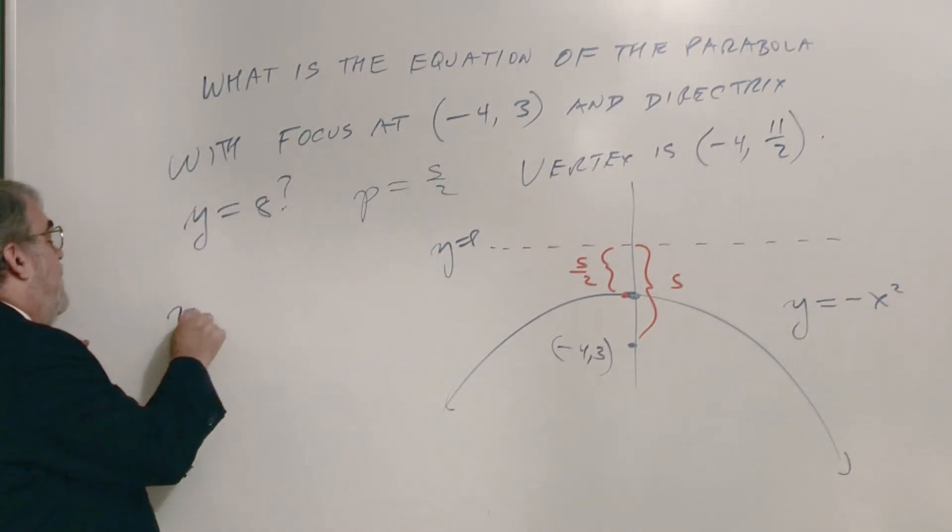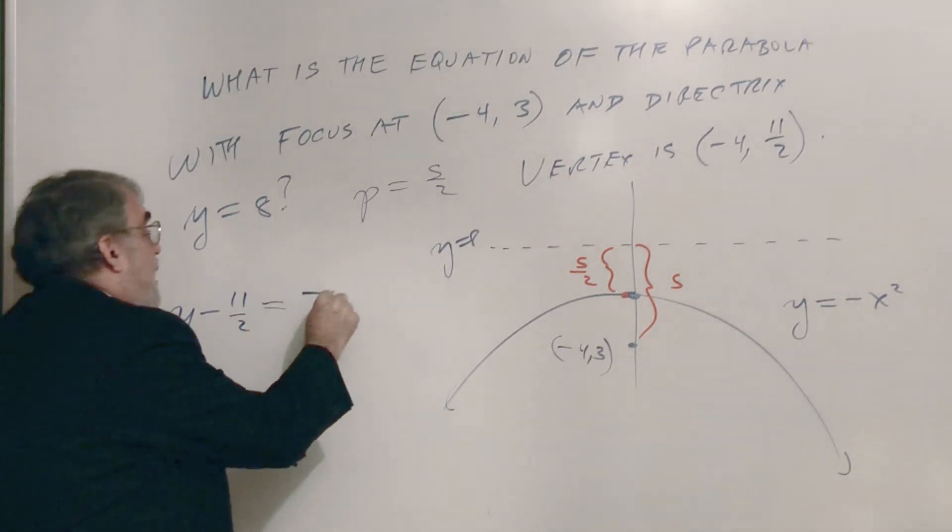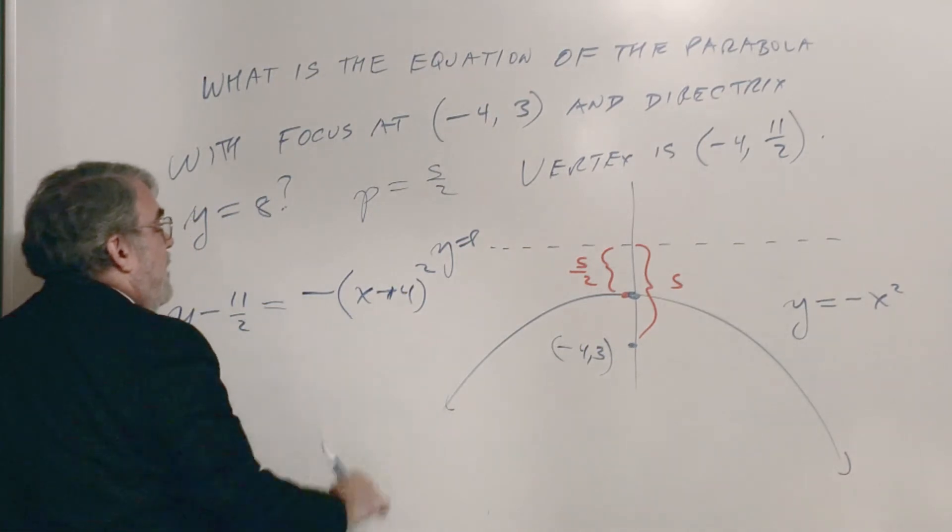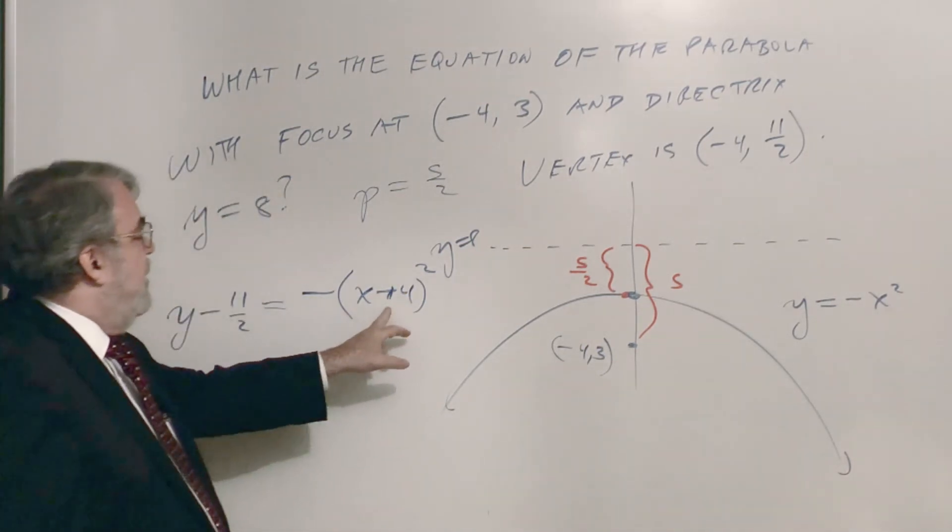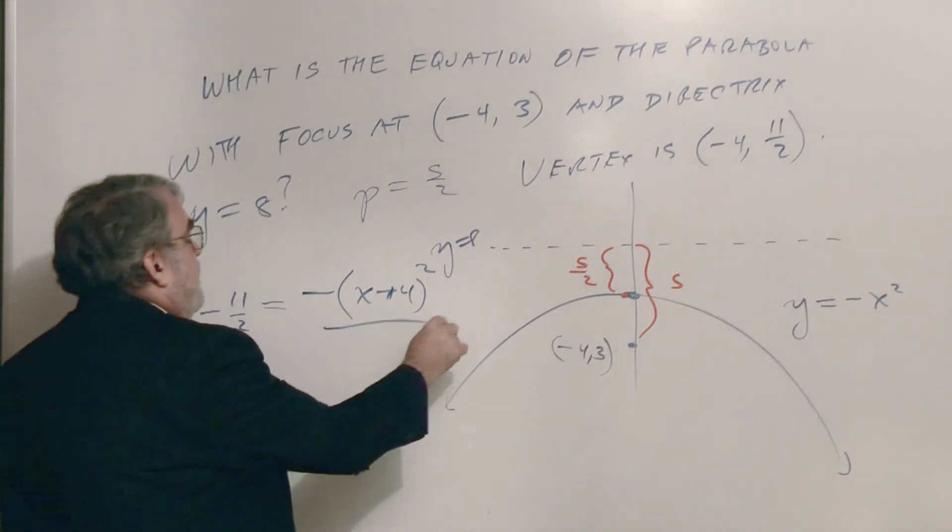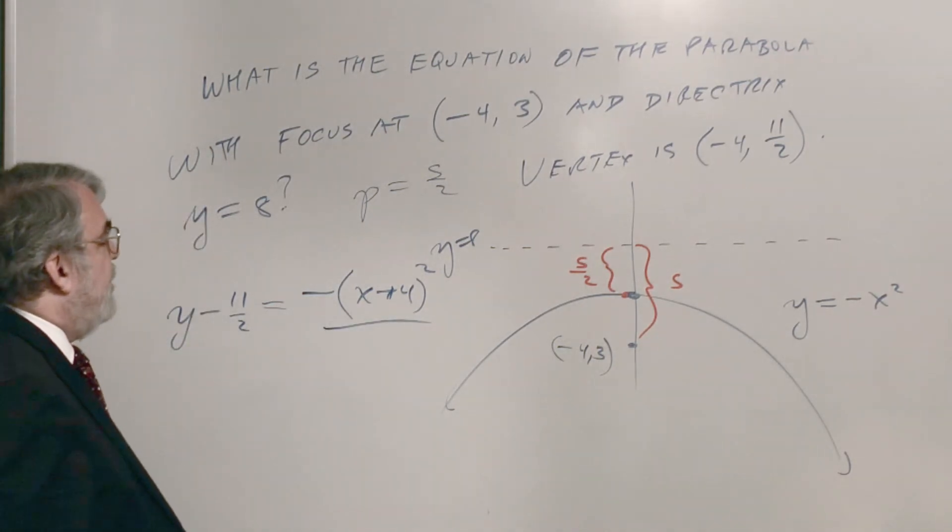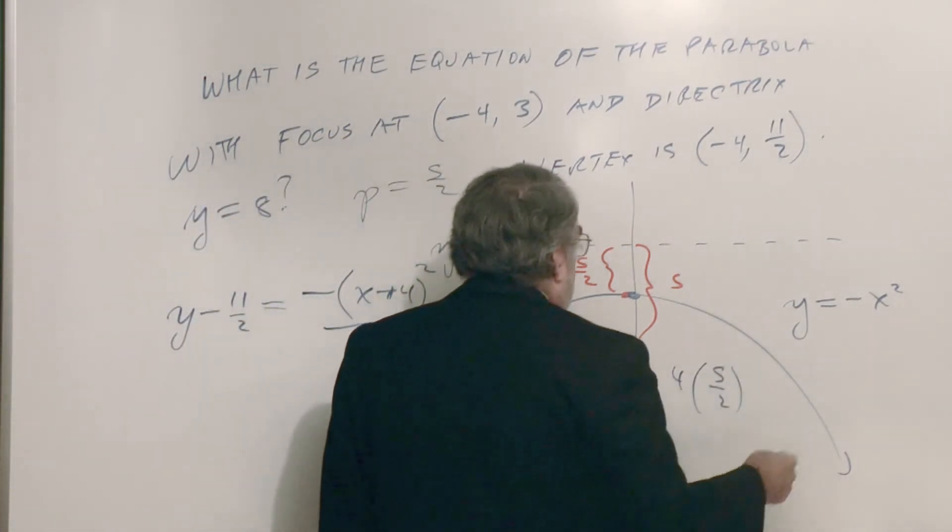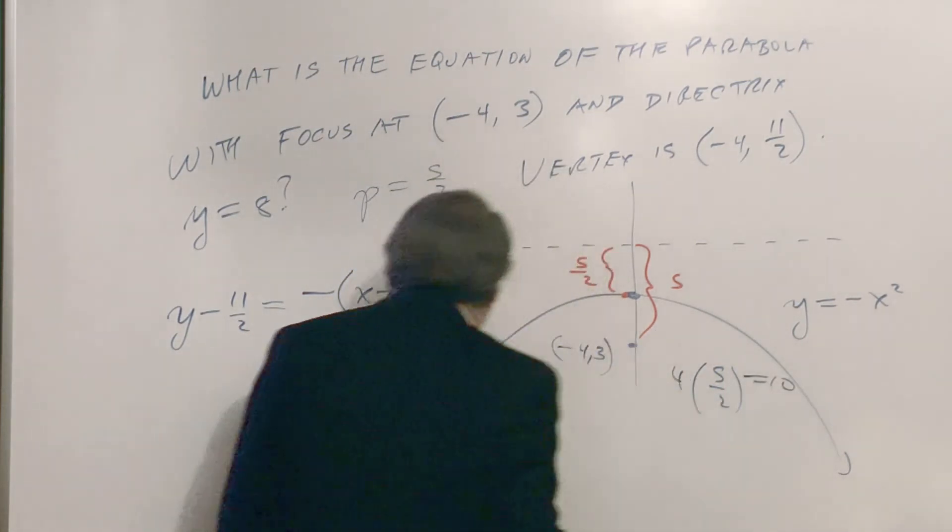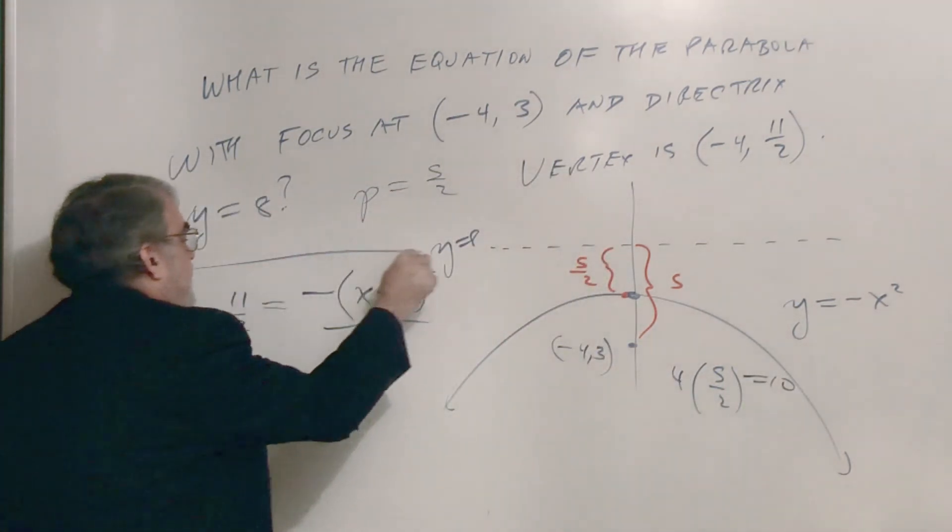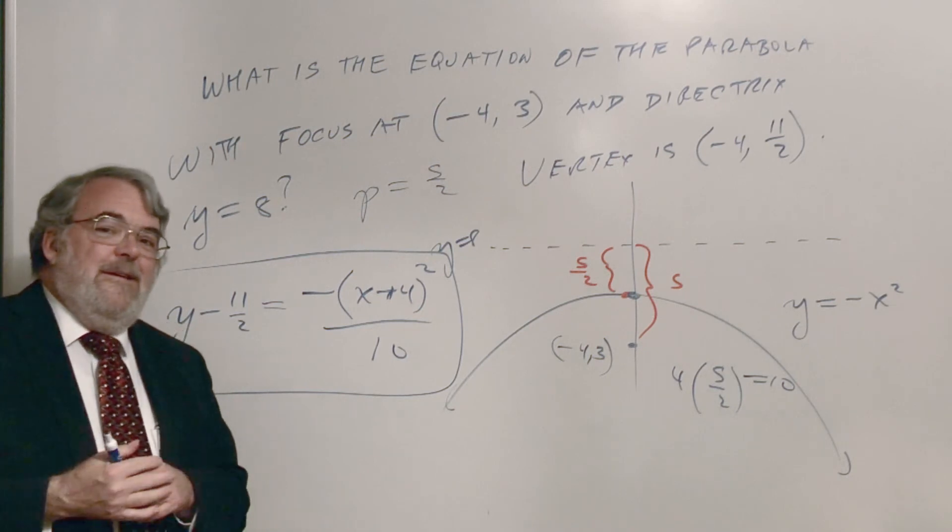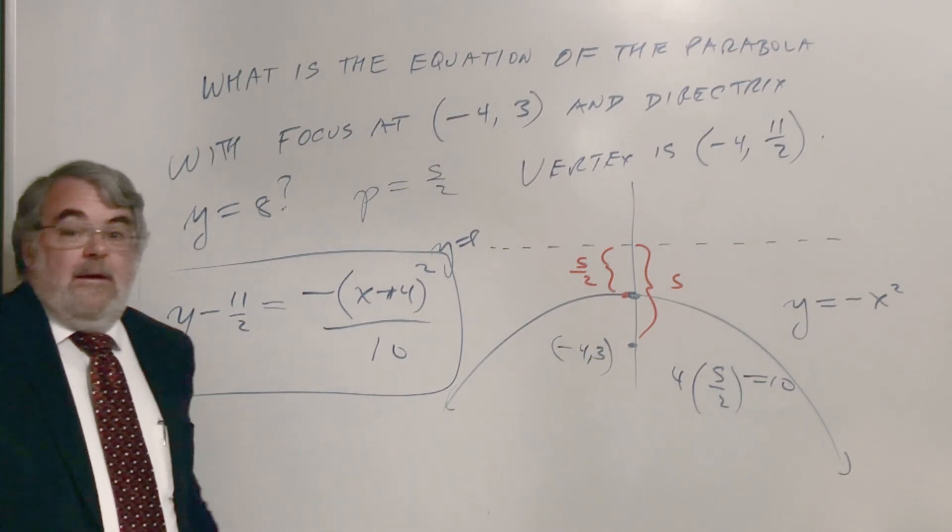So let's put it together. y minus eleven halves, okay there's the y coordinate of the vertex, equals negative parentheses x plus four squared. So here's the x value of the coordinate of the vertex is negative four, divided by, my four times my focal length, four times five halves. This is something, four times two and a half is equal to ten. So my denominator is ten. There we go. So let me block it off here. There's the equation of our parabola using the format with the focus in it.